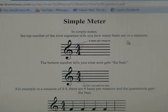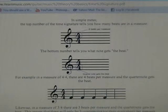Simple meter: the top number tells you how many beats you have per measure, as you can see right here, and the bottom number tells you what note gets the beat.